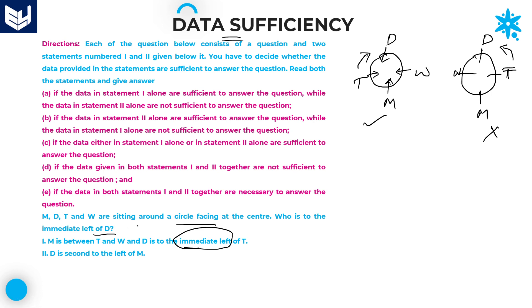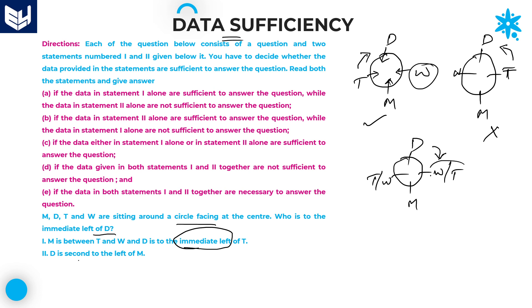So what is your question? Who is immediate left of D? D's immediate left is W. You will get the answer by using statement one alone. And if you take only the second statement — D is second to the left of M — you don't know the positions of T and W. So you will not get the answer by using the second statement. You are getting the answer only by using statement one alone. Therefore, your required answer is option A.